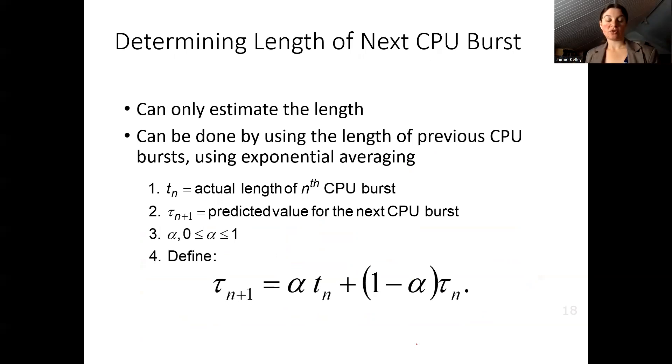When we are using our shortest time to completion or shortest job first algorithms, we have to care about the length of the next CPU burst. But we can't predict the future. We can try to estimate what that next CPU burst is going to be.